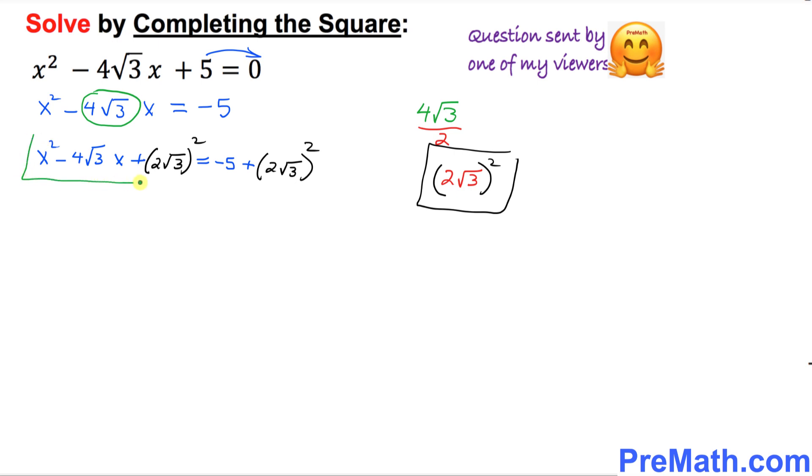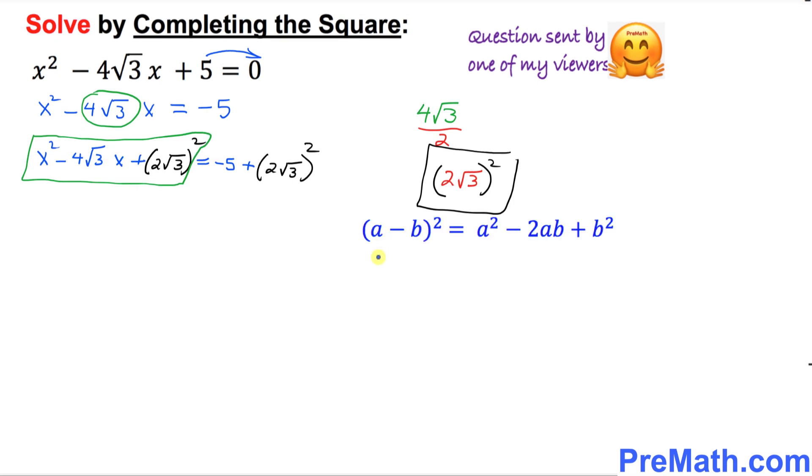Now I want you to focus on the left hand side, this part that you can see. And now we are going to use this well-known formula to put it in a complete square form. So this could be written as x minus 2 times square root of 3, complete square, equals to.